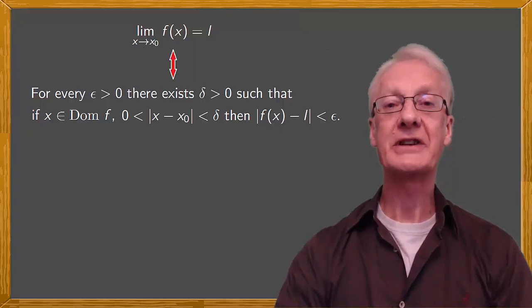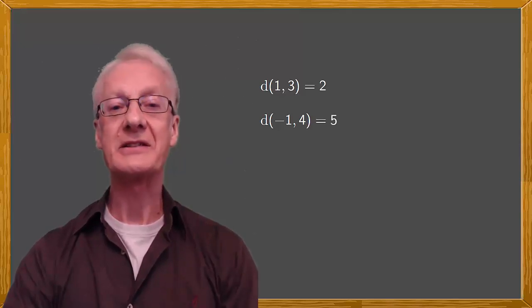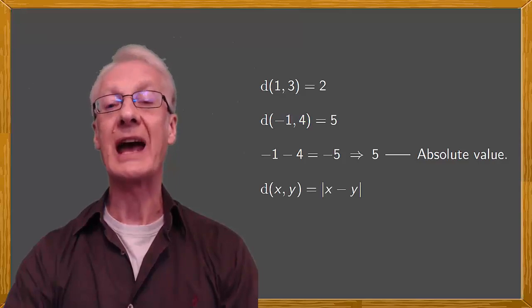The first step is to understand absolute values. If I ask you what's the distance between 1 and 3 you'll immediately tell me 2. If I ask you the distance between minus 1 and 4 you may have to think a little before answering 5. To calculate the distance between two numbers you subtract them. Minus 1 minus 4 is minus 5 which is negative. Negative distance? Well, if the answer is negative you just change the sign. And that gives you the absolute value.